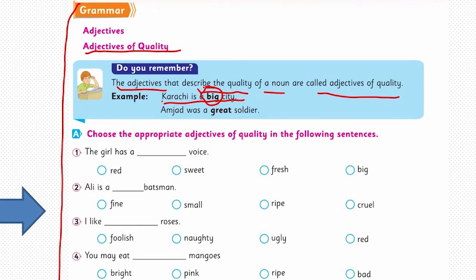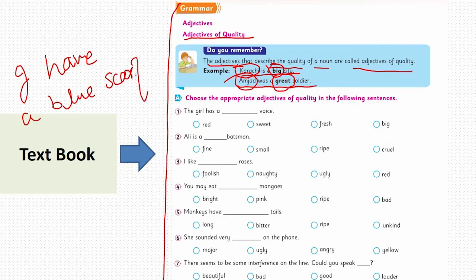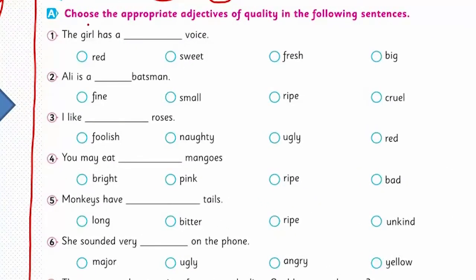For example: 'Karachi is a big city' — here 'big' is an adjective of quality, telling you that Karachi, the noun, is big. Second example: 'Amjad was a great soldier' — Amjad is the noun and 'great' is the adjective of quality. One more example: 'I have a blue scarf' — here 'blue' is the adjective of quality telling you the scarf is blue. That is its quality.